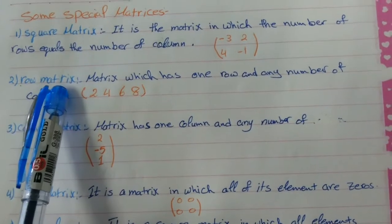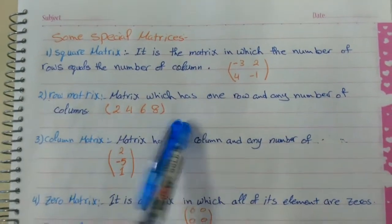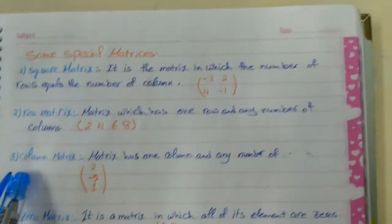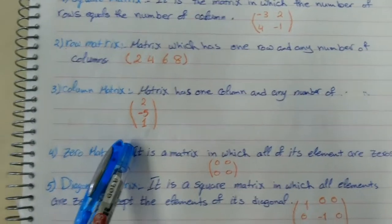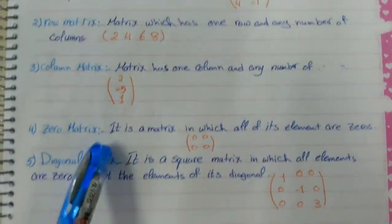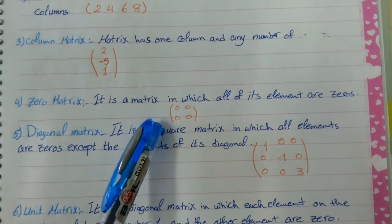We have row matrix. Row matrix from its name, so it has only one row and any number of columns. Column matrix also has only one column and any number of rows. Zero matrix, so all of the elements inside the matrix are zeros.